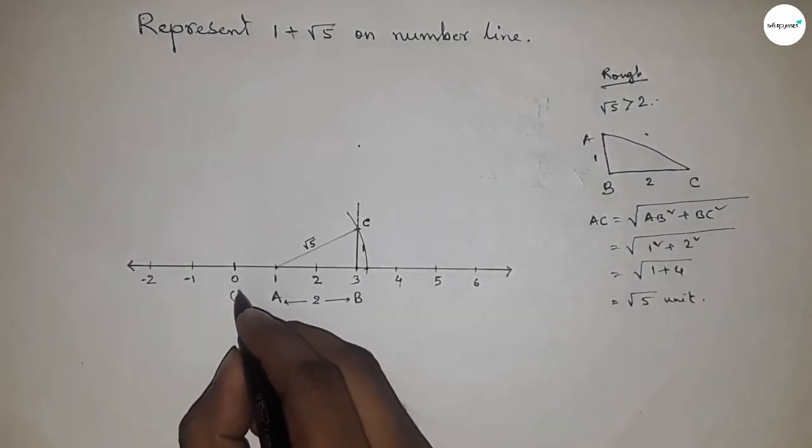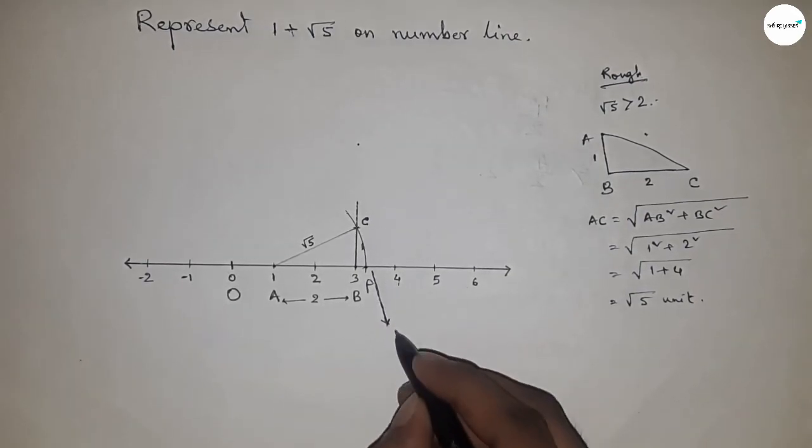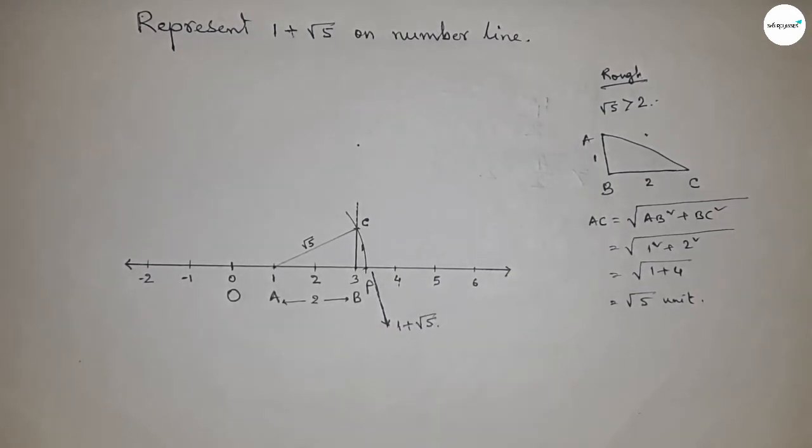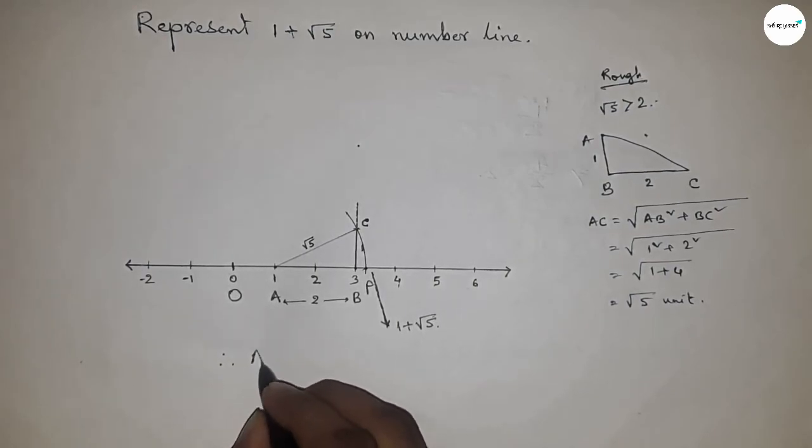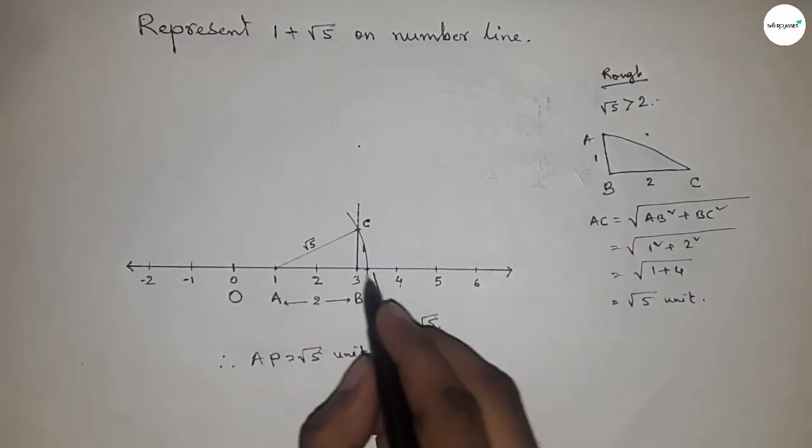This is 1 plus root 5. This is point O and this is point P. This is the representation of 1 plus root 5 on the number line. Therefore, distance AP equals root 5 units and OP equals 1 plus root 5 units.